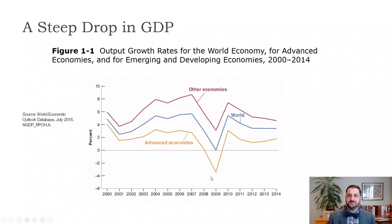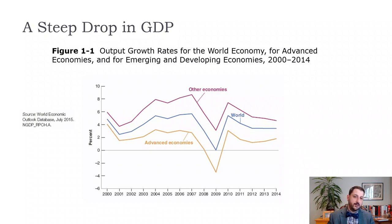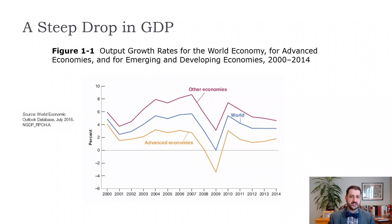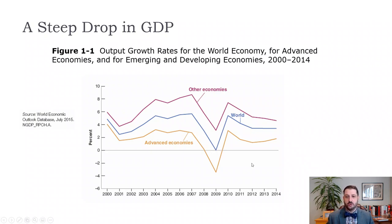Here we see output growth rates in the world and advanced economies, which usually means the OECD — basically Western Europe, the United States, Mexico, Japan, South Korea — essentially the richer countries. You can see that we had negative growth in 2009, especially in the advanced countries. Other economies were hit similarly but had been growing faster, so they stayed positive, and the world economy dropped to about zero in 2009 before recovering.